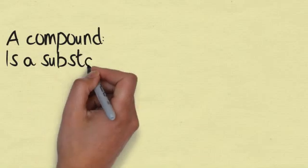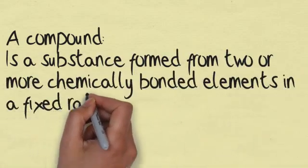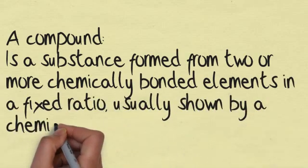A compound is a substance formed from two or more chemically bonded elements in a fixed ratio, usually shown by a chemical formula.